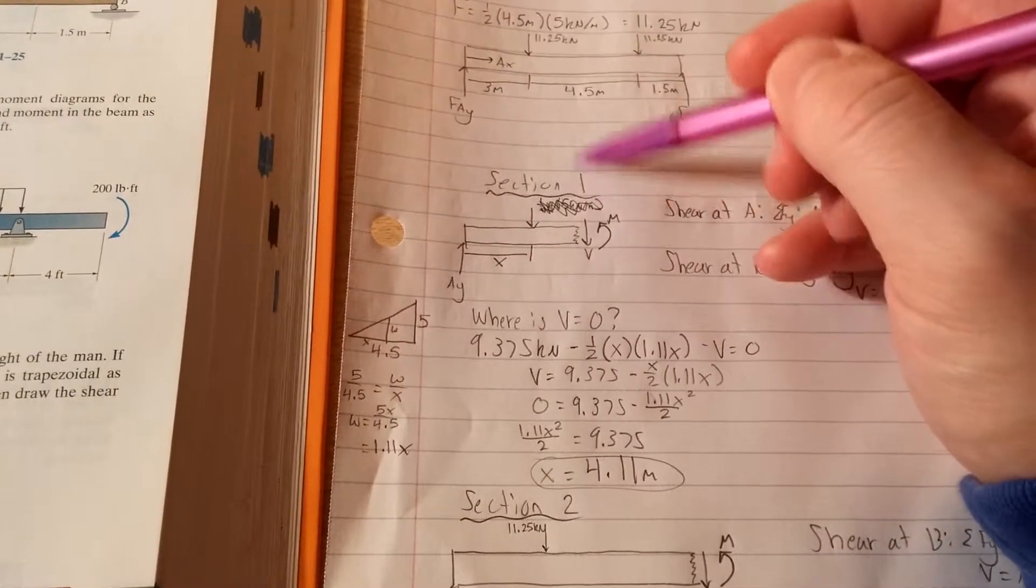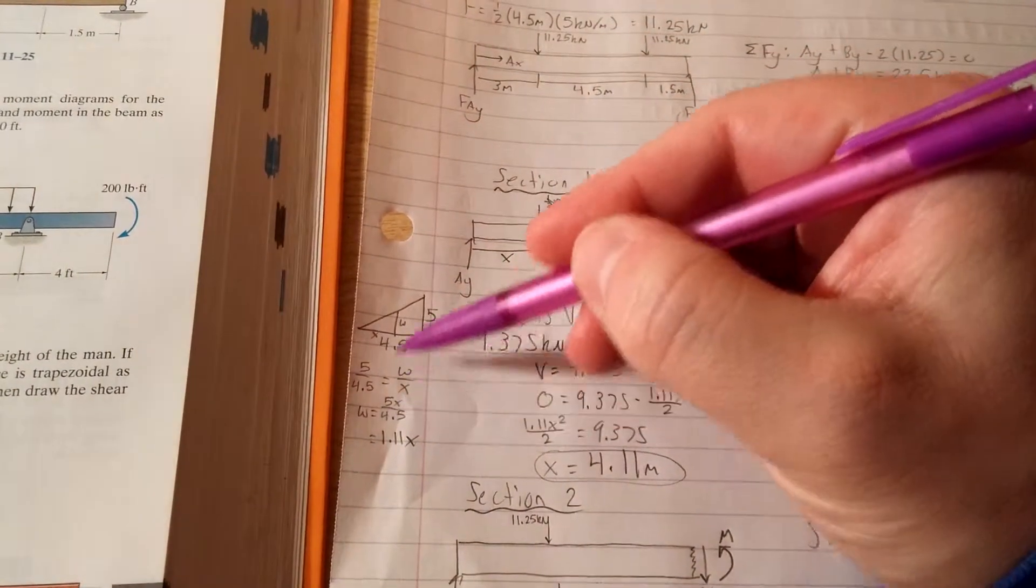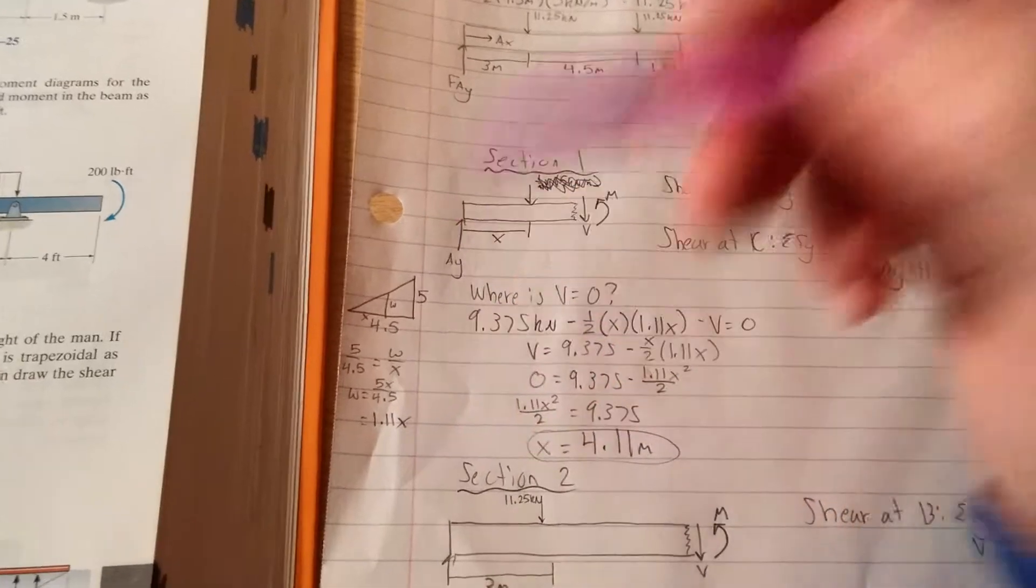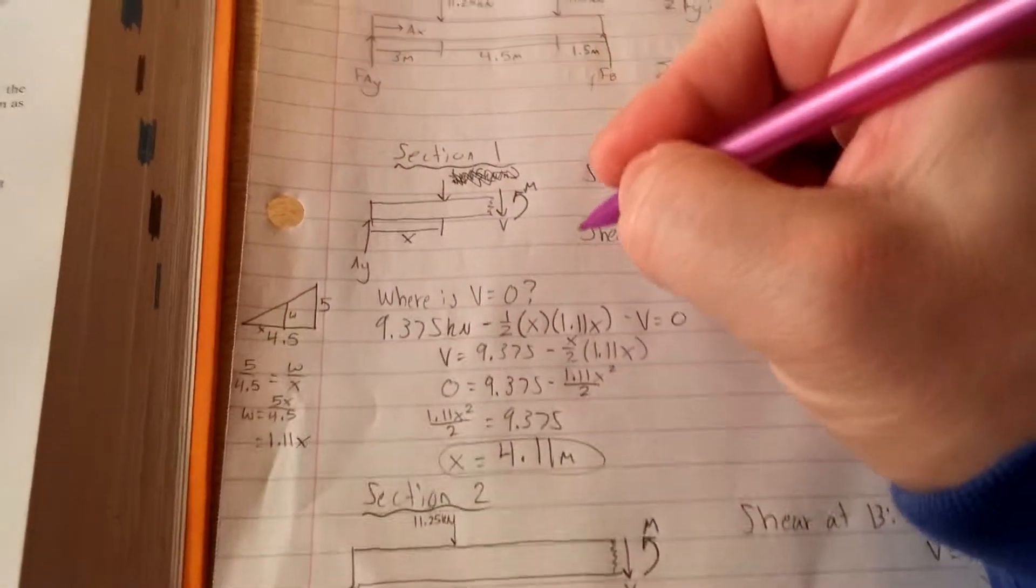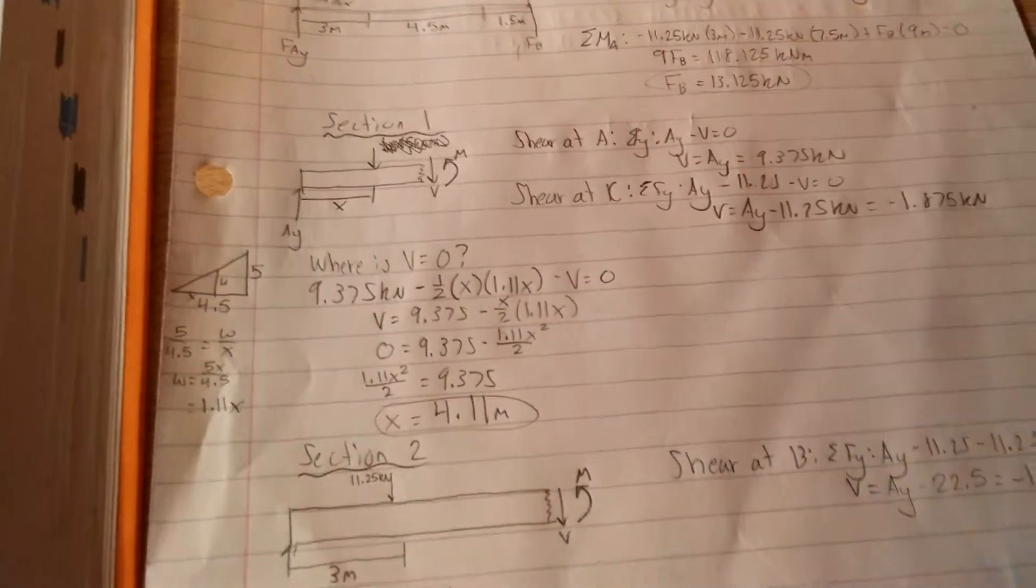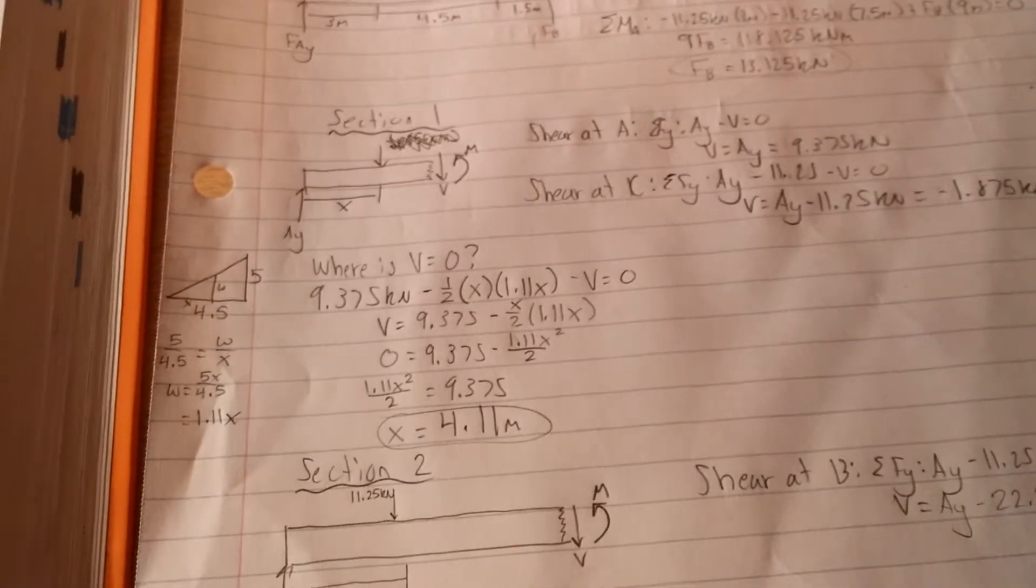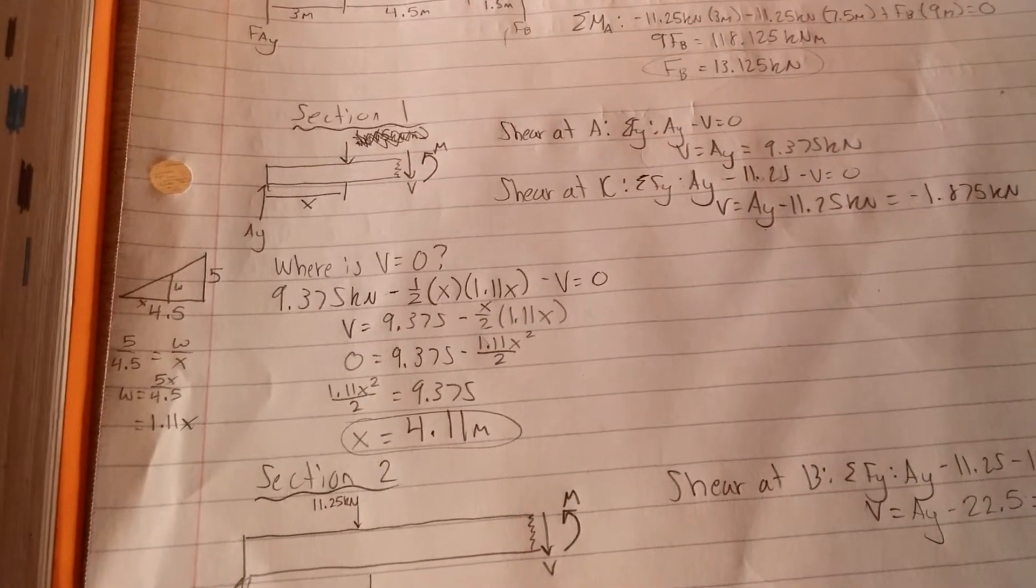We're going to solve for W, which would be that height. And we get 1.11X. So we know that wherever that triangle ends, it's going to be one-half times X times the height, which we found 1.11X.